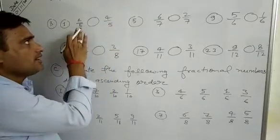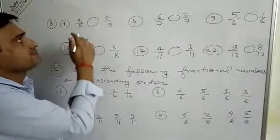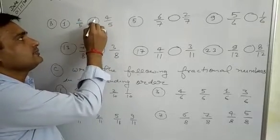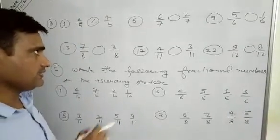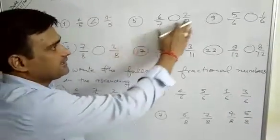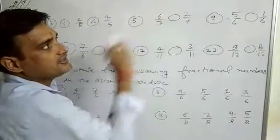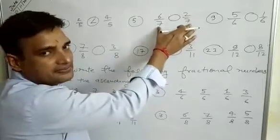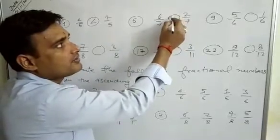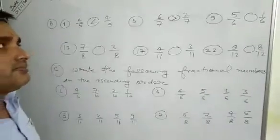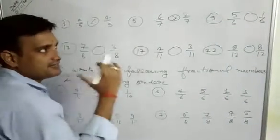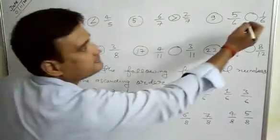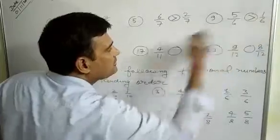In Part B, we compare the fractions directly. In question 3, 2 by 5 is less than 4 by 5 because 4 is greater than 2 and the denominator is the same. In question 5, we have 6 by 7 and 2 by 7. Since 6 is greater than 2 and the denominator is the same, we compare the numerators only. So 6 by 7 is greater than 2 by 7.